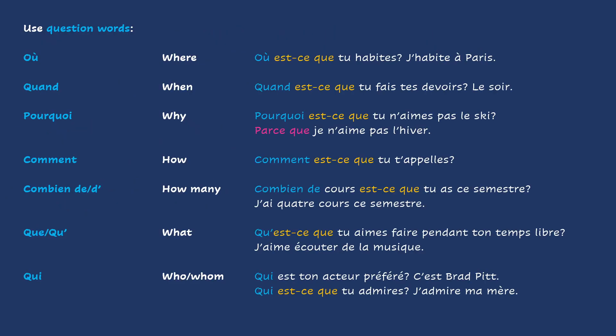But now we want to learn how to ask more specific questions with question words because we want more information in the answers. So, for example, you could use où, which means where. Just like in English, you would place your question word at the beginning of your sentence.